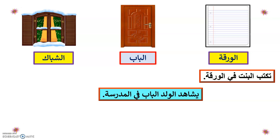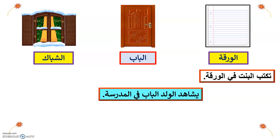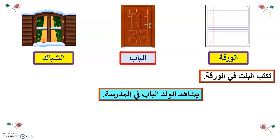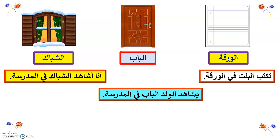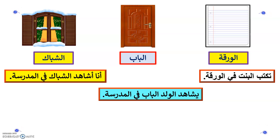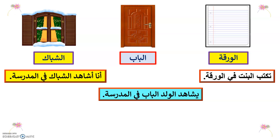Can you give me a sentence? Ana aqshahid alshubak fi alfas — okay, very good. Ana aqshahid alshubak fi almadrasa — I see the window in the school.